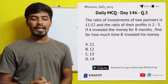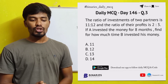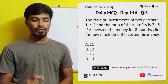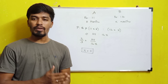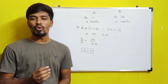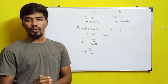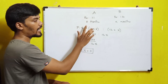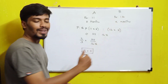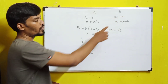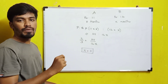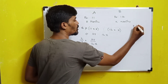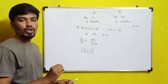The last question: The ratio of investment of two partners is 11 : 12 and the ratio of their profits is 2 : 3. If A invested the money for eight months, find for how much time B invested his money. Here both the amount and the time duration are different. A has invested Rupees 11 for eight months and B has invested Rupees 12 for x months, and the profit ratio is 2 : 3.